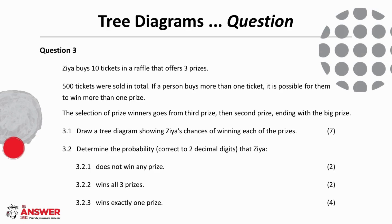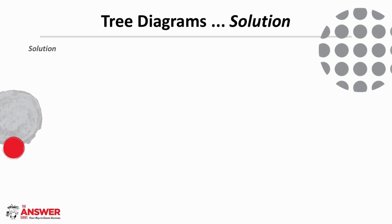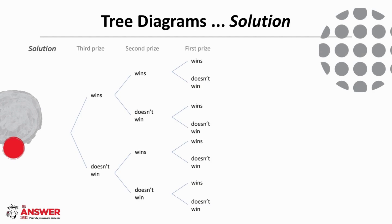Our third tree diagram question is based on tickets bought in a raffle, and we are asked to draw a tree diagram showing the chances of winning each of the prizes and then to determine these probabilities. Pause the video for a moment to read through the question and to give it a try. We start off by seeing that there are three prizes to be won, so there will need to be three layers to our tree diagram. For each prize in each eventuality the two options are she wins or she doesn't win. For the first draw there are 500 tickets to select from and 10 of these tickets are Zia's, so the probability she wins third prize is 10 over 500.